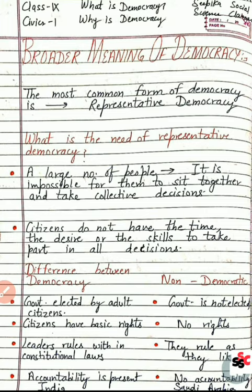अब देखते हैं, what is the need of representative democracy? हमने representative democracy क्यों लिए, direct democracy क्यों नहीं लिए — उसके लिए कुछ reasons हैं। A large number of people live here — a country like India has such a large population that it is physically impossible for them to sit together and take a collective decision. About 130 crore लोग एक जगह पर इकट्ठे नहीं बैठ सकते, तो इतने सारे लोग physically present नहीं हो सकते और decision making process में involved नहीं हो सकते।